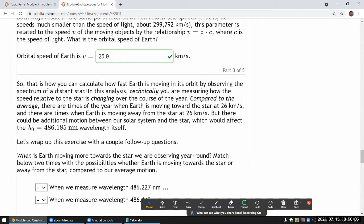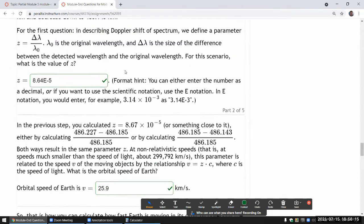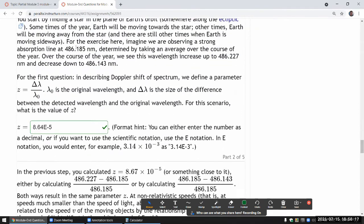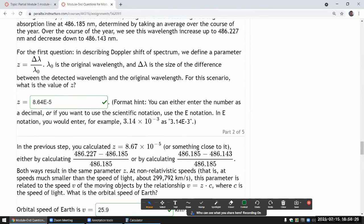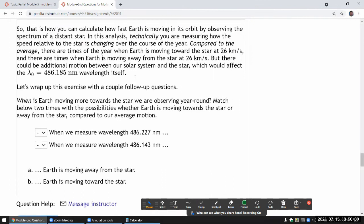And technically you are measuring half as the relative. So the star could be actually moving relative to the solar system. And what you are measuring here, taking the, kind of using the average and taking the difference between the extremes and the average, you are in that process you kind of cancel out whatever the velocity of the star is. So yeah, let's wrap it up with a couple of follow-up questions.